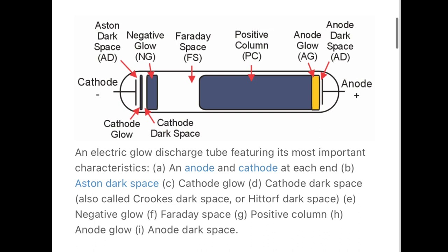Once free of the cathode, atoms move into the bulk of the glow discharge through drift and due to the energy they gained from sputtering. The atoms can then be collisionally excited. These collisions may be with ions, electrons, or other atoms that have been previously excited by collisions with ions, electrons, or atoms. Once excited, atoms will lose their energy fairly quickly. Of the various ways that this energy can be lost, the most important is radiatively, meaning that a photon is released to carry the energy away. In optical atomic spectroscopy, the wavelength of this photon can be used to determine the identity of the atom — that is, which chemical element it is.